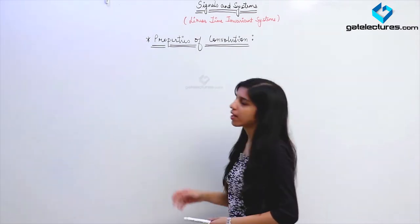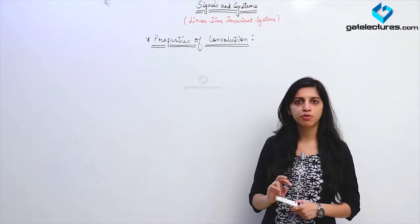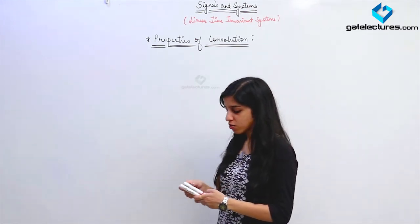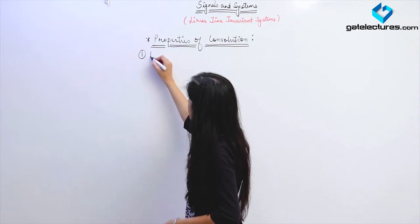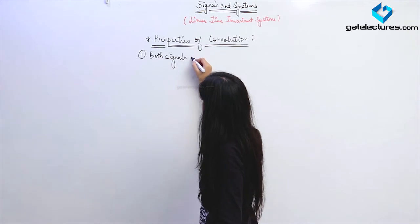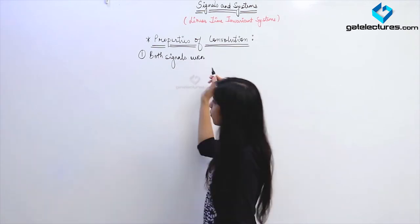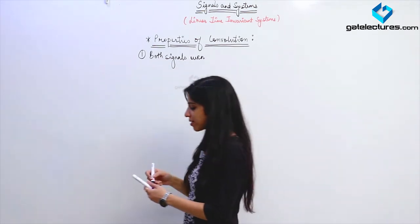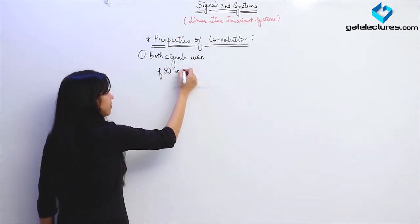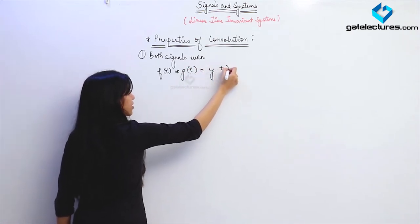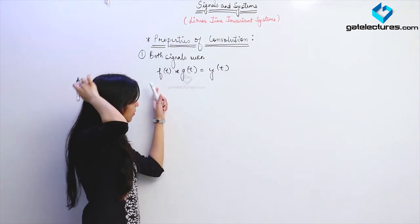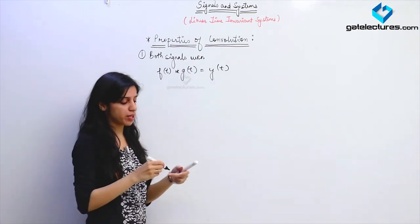Now we are going to look at what happens to the convolution of two signals when both signals are even, both signals are odd, or one is even and one is odd. Starting with both signals even — suppose you are convoluting two even signals F(T) and G(T) whose convolution is Y(T). We want to check whether Y(T) is going to be even or odd.